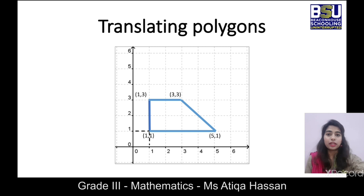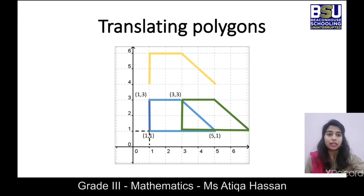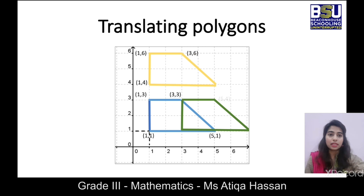The fourth point of the trapezium is (5, 1). Now I'm going to translate this polygon along the x-axis — the left-right direction. You can see I'm moving it to the right side, and a new translated polygon is formed along the x-axis. I can also translate the polygon along the y-axis — the up-down direction. When moving along the y-axis, the x-values remain the same while the y-values change.